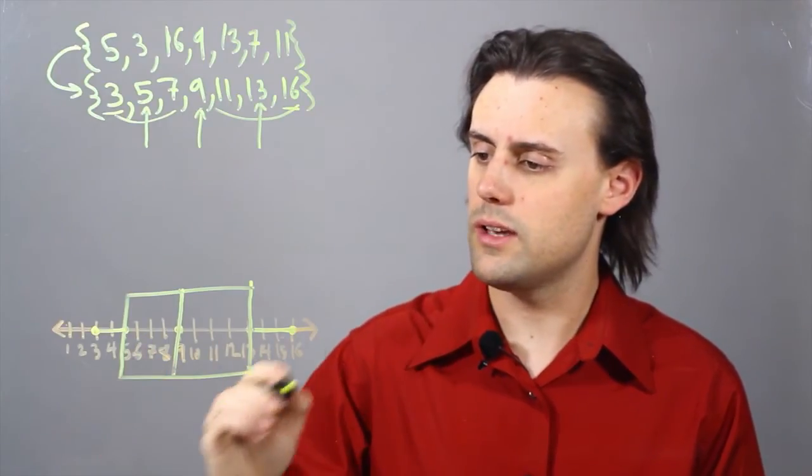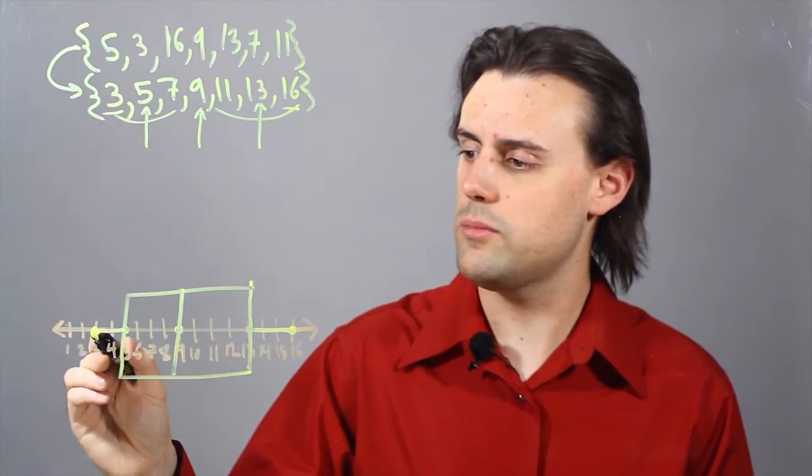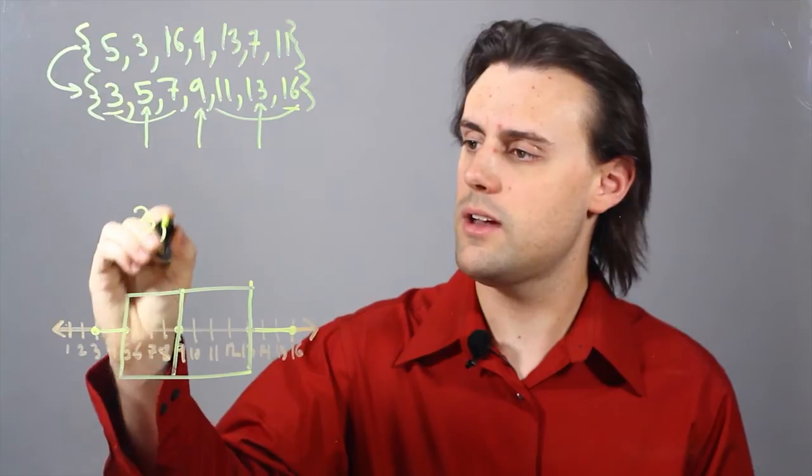So, given this box and whiskers plot, we identify the extremes as the ends of the whiskers, and in this case, they are 3 and 16.